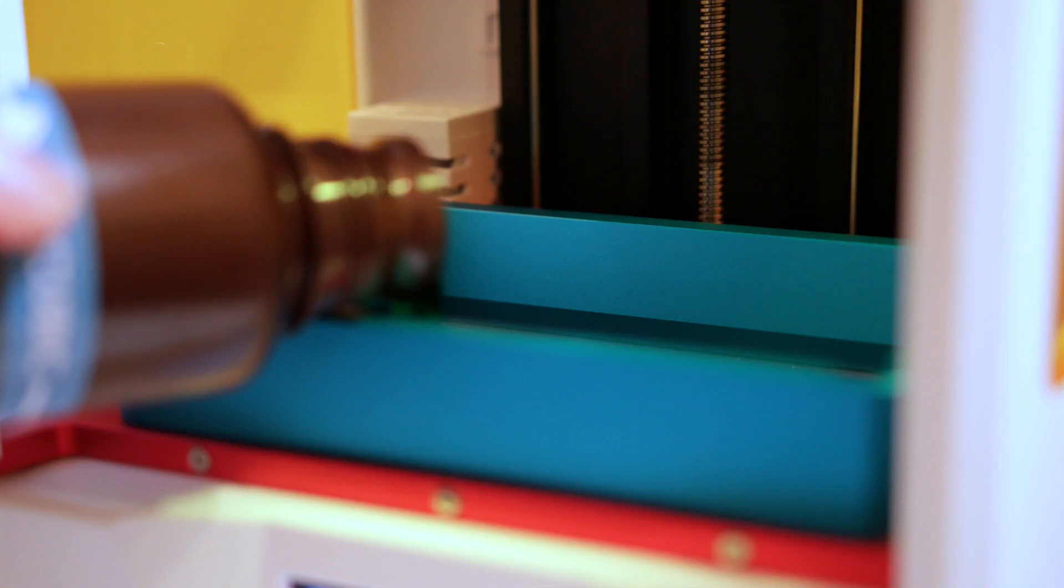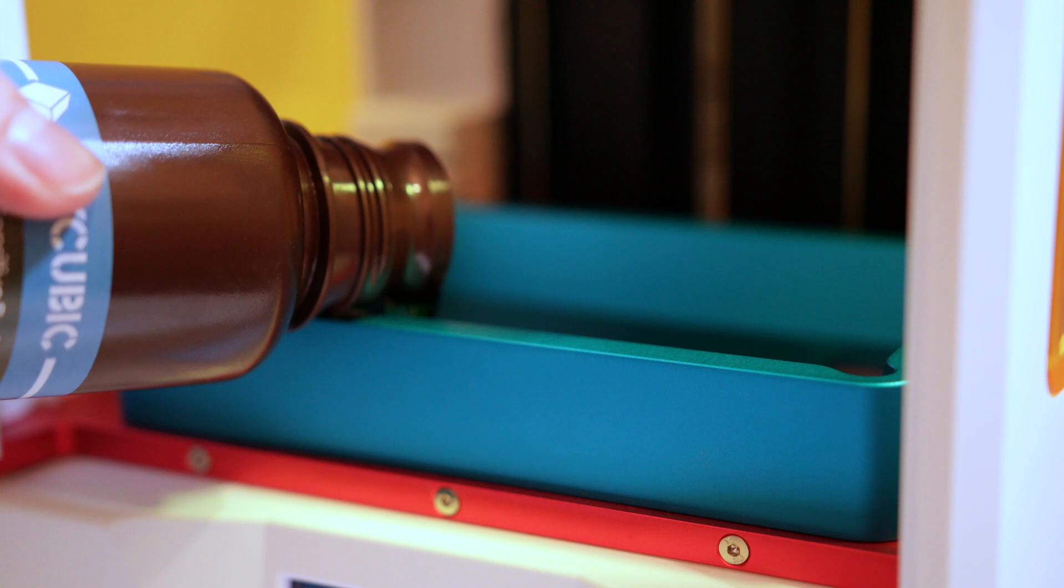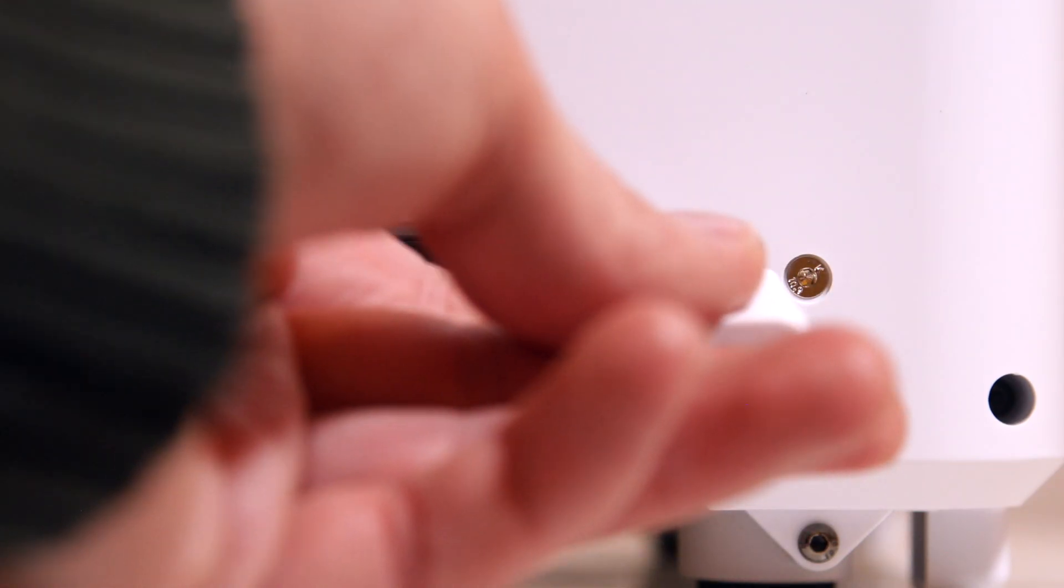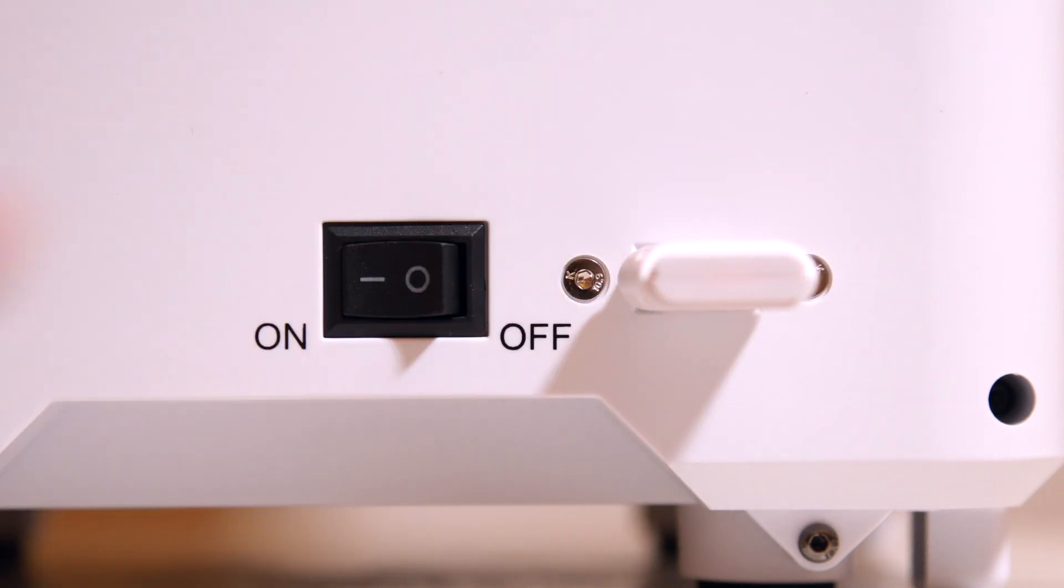You can move the bed out the way, remove the paper, install the vat, fill up with resin, put the included flash drive in and press print. It really is that simple compared to FDM printing.